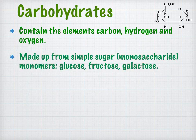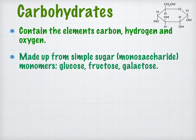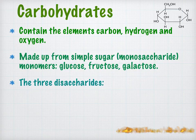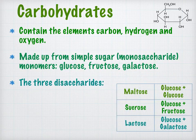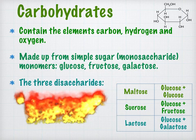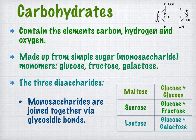Larger carbohydrates are made up from polymers of simple sugars. As well as glucose you've got fructose and galactose. These single subunits are called monomers, and monosaccharides are specifically the carbohydrate monomers. There are three disaccharides you need to know: maltose, which is two glucose monosaccharides joined together; sucrose, which is glucose plus fructose; and lactose, which is glucose plus galactose.